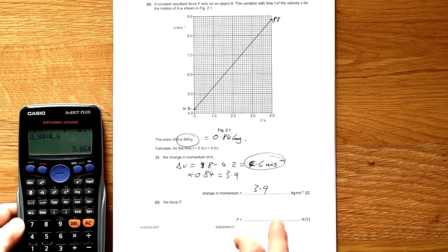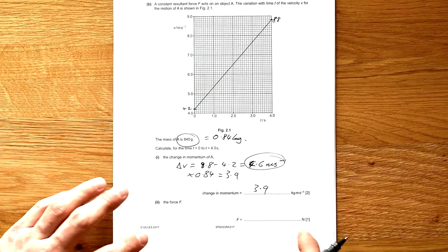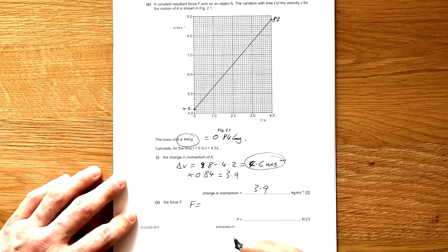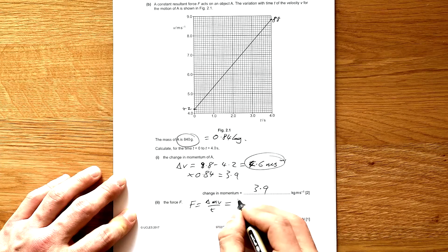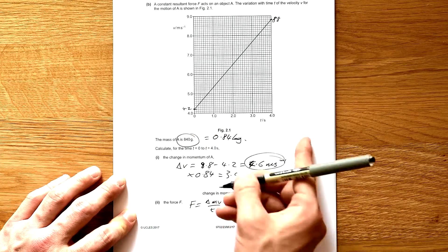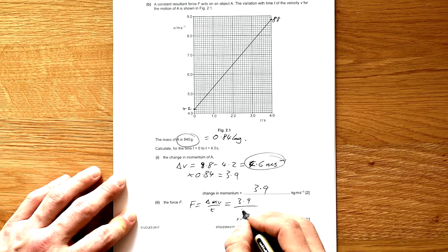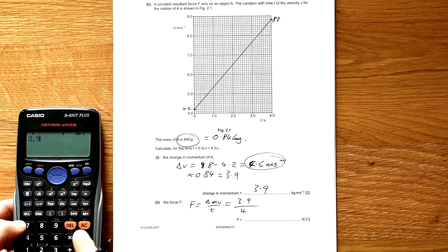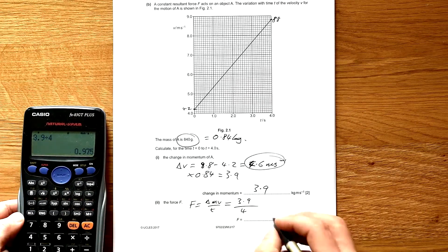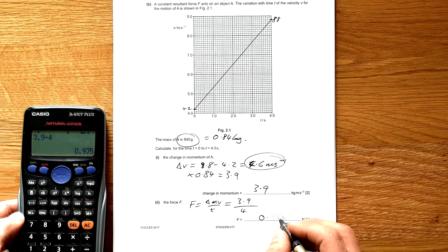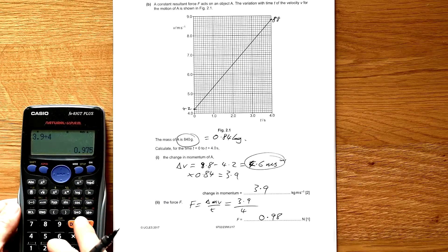That's 3.9 kilogram metres per second. For force F, we know that force equals change in momentum over time. So that's 3.9 divided by the time taken, which was 4 seconds, giving us approximately 0.98 Newtons.